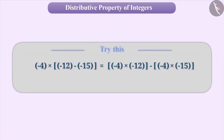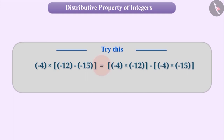Try and solve the given question: Is (−4) × (−12 − (−15)) equal to (−4) × (−12) − (−4) × (−15)?